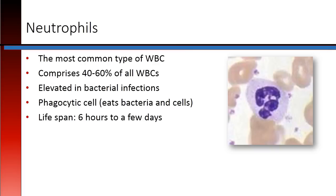Neutrophils are the most common type of white blood cell, comprising 40 to 60% of the total white blood cells in your body. Neutrophils are elevated in bacterial infections. They are phagocytic cells, which means they eat bacteria and other cells. The lifespan of a neutrophil is between six hours to a few days.